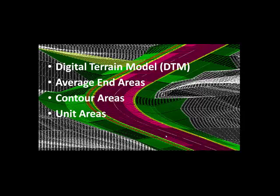So, the four basic methods were digital terrain model, average end areas, contour areas, and unit areas. A digital terrain model requires the use of CAD software. Average end areas, contour areas, and unit areas can all be done by hand computations. And, thus, they have been around a long time.